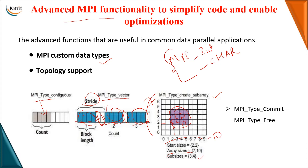When you want additional functionality using MPI custom data types, before you start using them you must call MPI_Type_commit to enable the custom data type. Once you have finished using it, you call MPI_Type_free so the custom data type is released and available for future use.